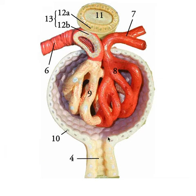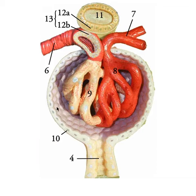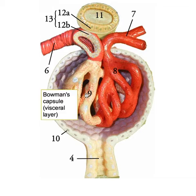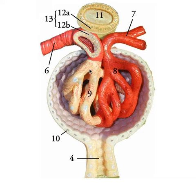Overall we've got this renal corpuscle with our Bowman's capsule around the outside. The Bowman's capsule actually has two different layers, just like we've seen in a lot of other organs — a visceral and parietal layer. The parietal layer is the external layer of the Bowman's capsule, and the visceral layer is made up of these yellow colored cells covering the capillary bed. More specifically, we call these cells podocytes.